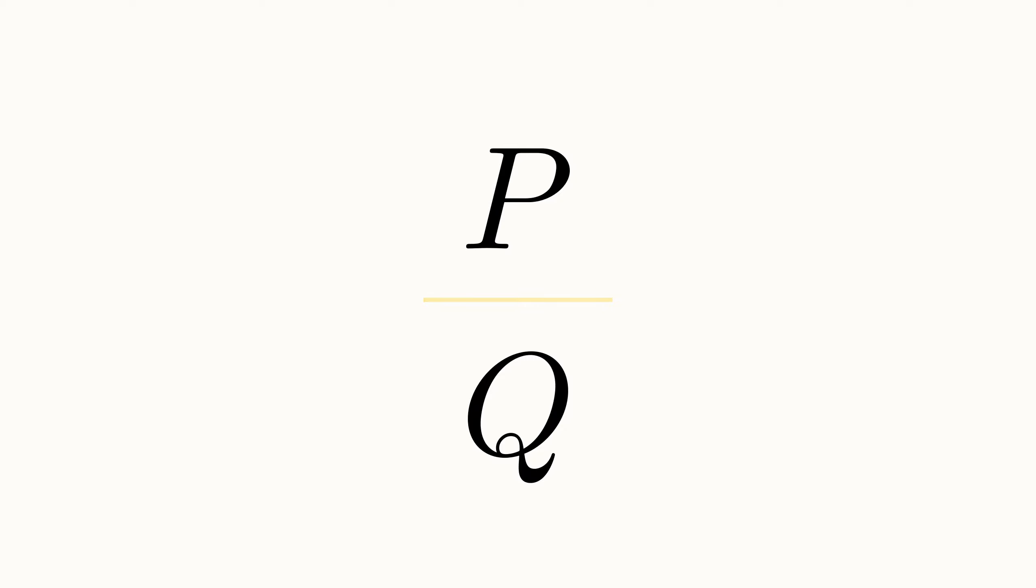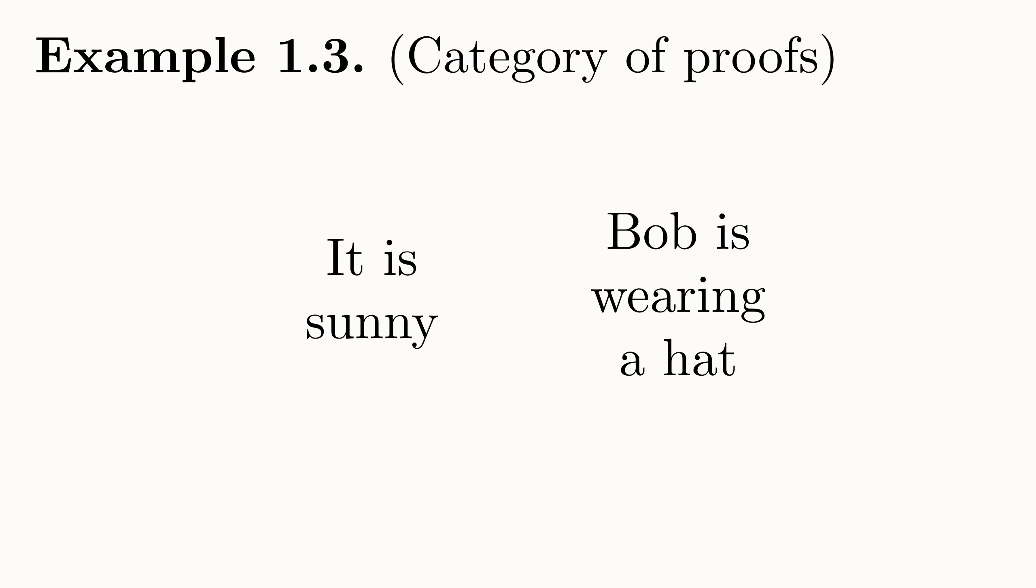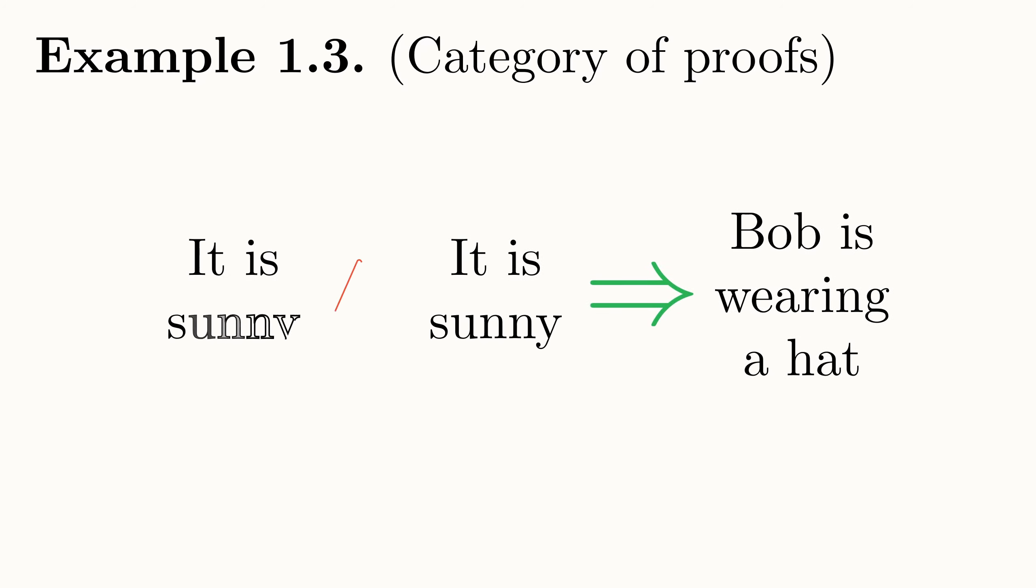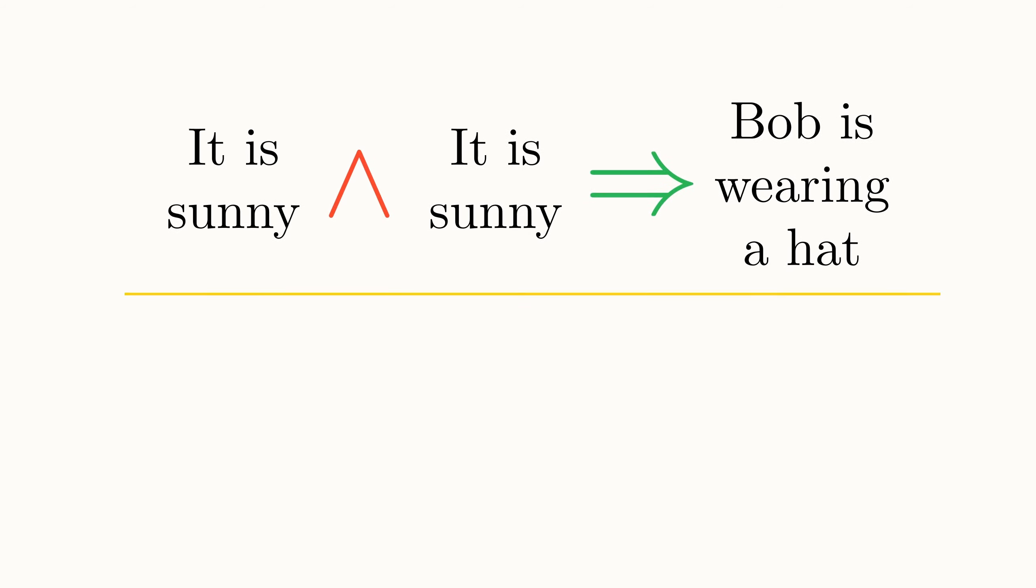As an example, let P be the proposition that it is sunny and Q be the proposition that Bob is wearing a hat. Consider the proposition P implies Q. In other words, the proposition that if it is sunny, then Bob wears a hat. Then finally, we'll look at the new proposition P and P implies Q, written with this little upside-down V meaning and. This proposition would read as it is sunny and if it is sunny, Bob wears a hat. It shouldn't be too hard to see how, given the proposition P and P implies Q is true, then Q must be true. In other words, Bob must be wearing a hat.